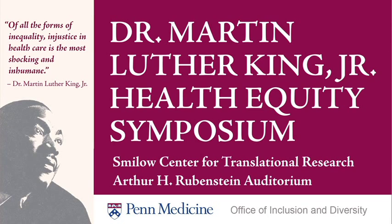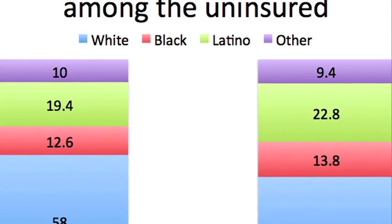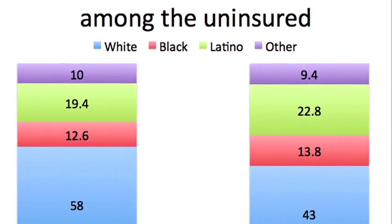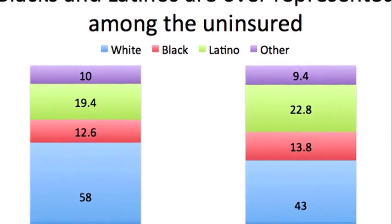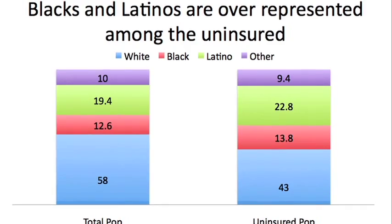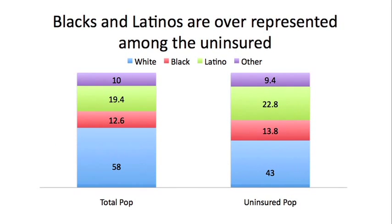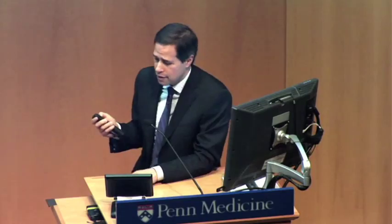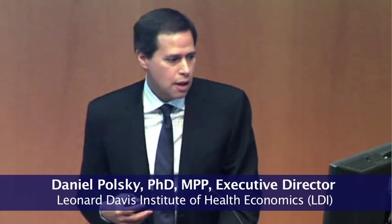What about race? This shows the distribution of the uninsured by the total population by race, and this is the distribution of the uninsured population. Blacks and Hispanics are over-represented in the uninsured groups. So if we reduce that part of the pie, we'll be addressing inequity in insurance rates.